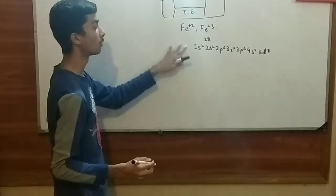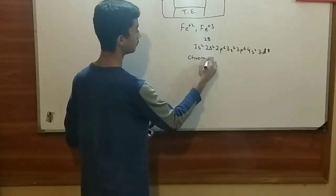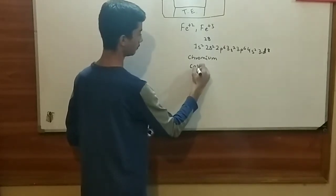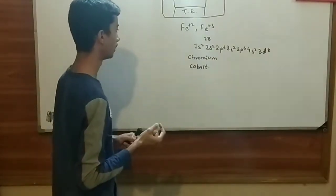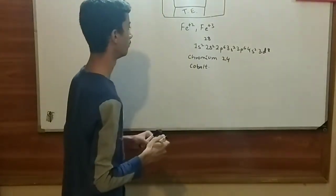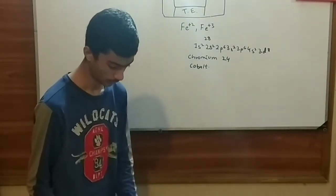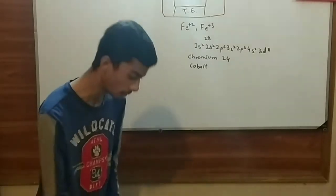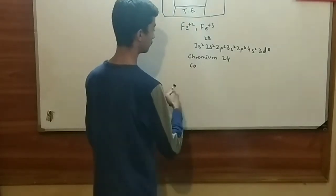But it would remain the same for all of the elements except two elements in the first series. It's about the chromium and copper. Copper has an exception in the electronic configuration.